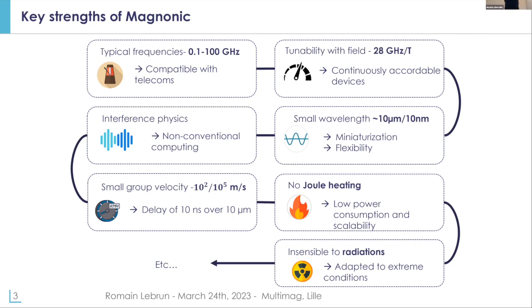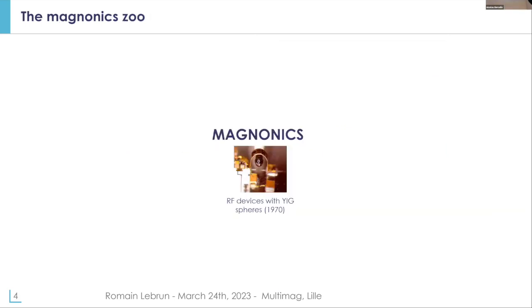Another advantage is that the group velocity is much smaller, on the order of 100 meters to 1 kilometer per second. And if you consider a magnetic insulator, you won't have any Joule heating in those materials. So those are a few reasons for which people have been trying to use spin waves to develop magnetic devices. As I said, it started really in the 1970s, maybe even the 1960s, and these technologies are already used in some spectrum analyzers and network analyzers.